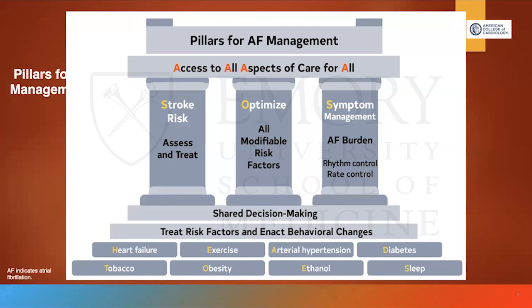They use the mnemonic 'HEAD TO TOES' to cover modifiable risk factors: Heart failure, Exercise, treating Arterial hypertension, optimizing glucose (Diabetes), Tobacco cessation, Obesity via increased physical activity, reducing alcohol consumption, and Sleep. The guidelines also emphasize shared decision-making with patients regarding newer recommended therapies. Rate control was previously the preferred go-to method, but that has changed with recent studies.